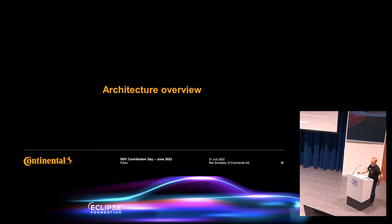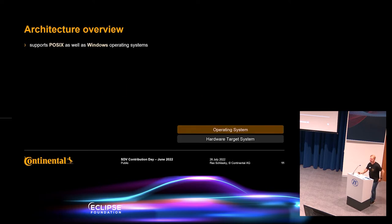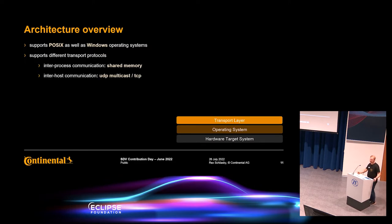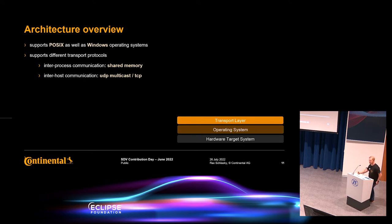Now let's go into more technical detail with an architectural overview. eCal supports Windows and POSIX operating systems — it runs on embedded Linux systems, standard Ubuntu distributions, and also QNX in a stable release. It supports different transfer protocols for message transport: for local inter-process communication it uses shared memory, and can also use Iceoryx. For inter-host communication it uses UDP multicast or TCP in the latest version.